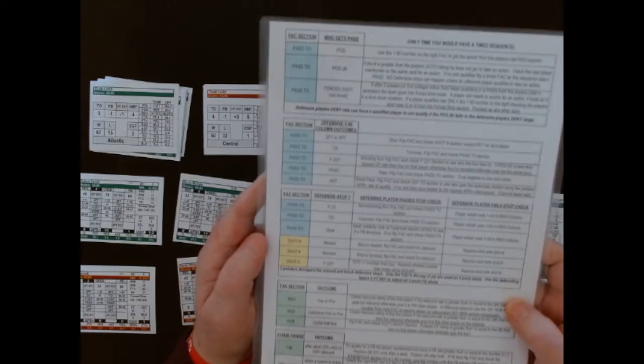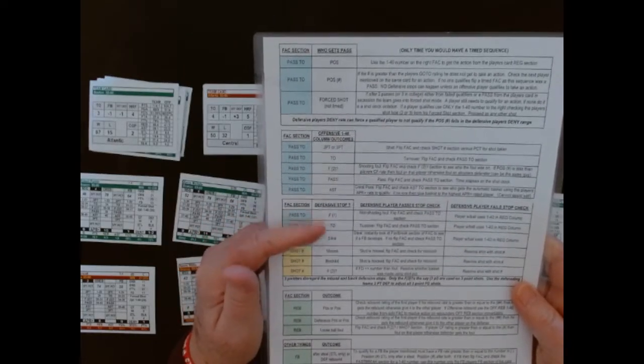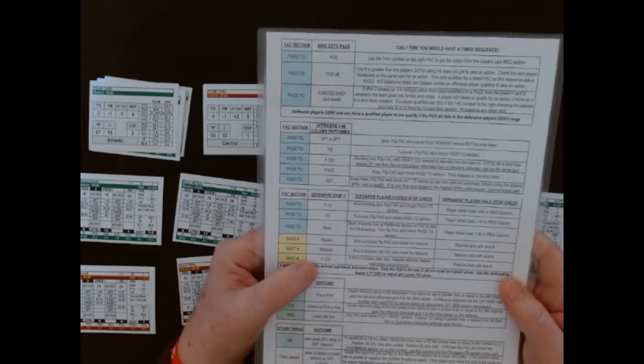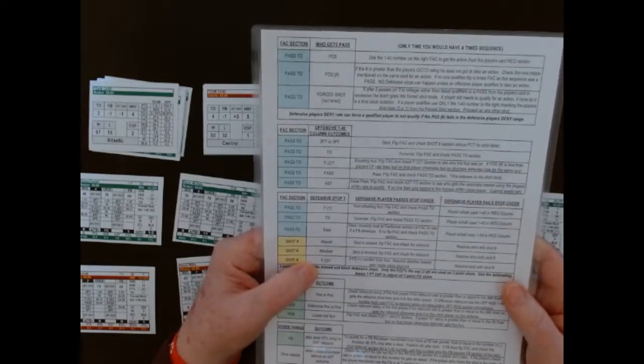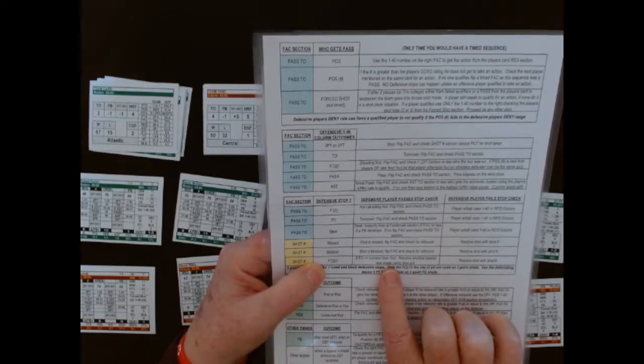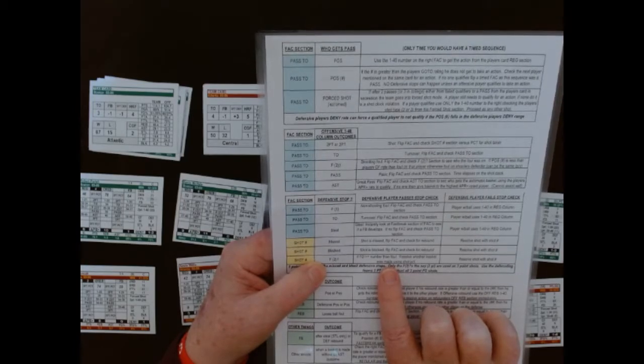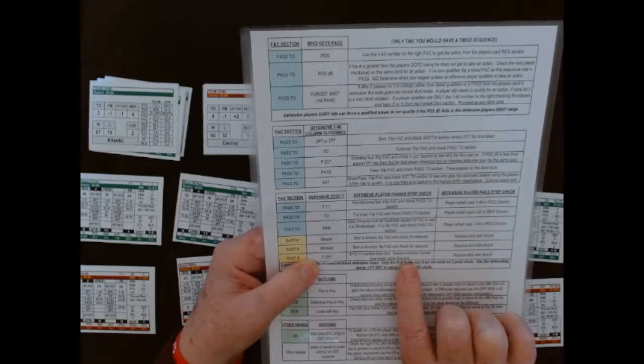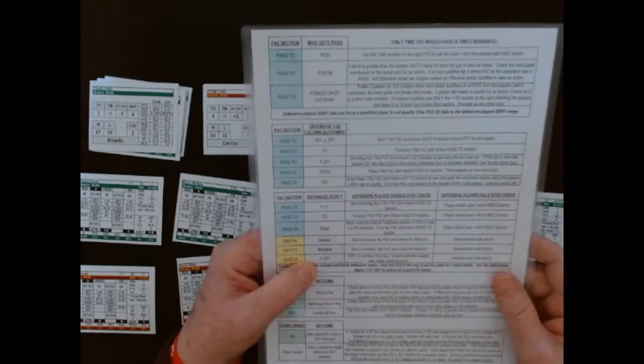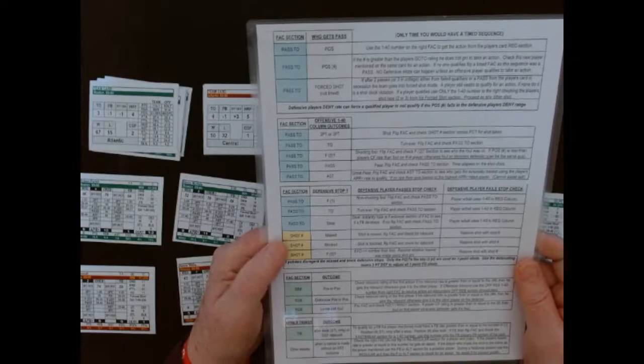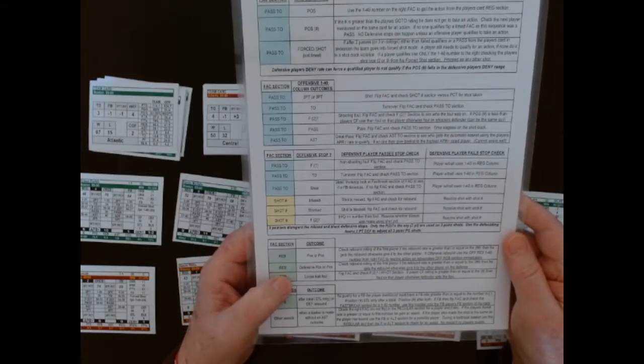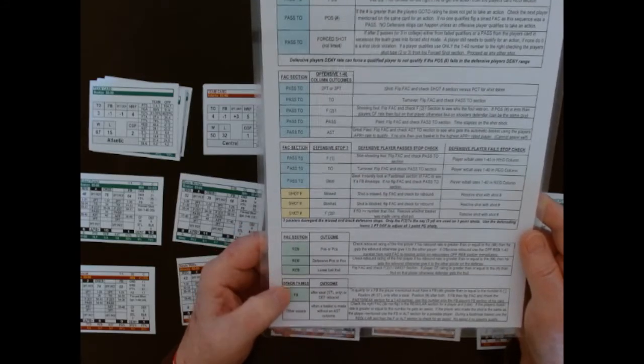And also showing you this is more than down here on defensive stops. Shots missed block. There's that one we were just talking about. It says if the FD rate number, oh, I read, did it wrong. It says if the FD number is greater than or equal to the foul, resolve whether the basket was made using the shot percentage. Then we got the fact section on rebounds, different types of rebounds, loose ball fouls, and other things.